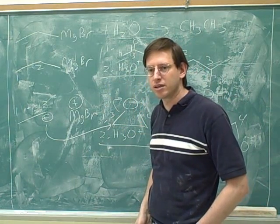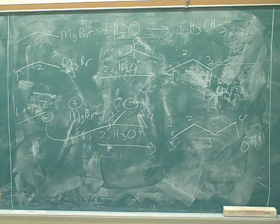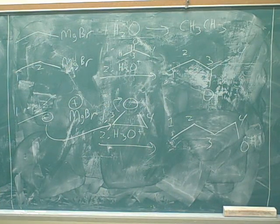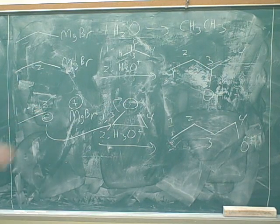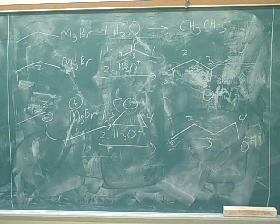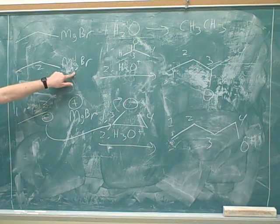Don't you get another carbon-carbon bond in E2 or E1? You get a pi bond. That's right. So I should say — you got me. That's a way to form a carbon-carbon pi bond. What we're really talking about is ways to form carbon-carbon sigma bonds. We only have two ways to form carbon-carbon sigma bonds: a Grignard attacking a carbonyl. That's what we have here.